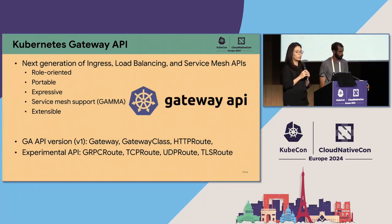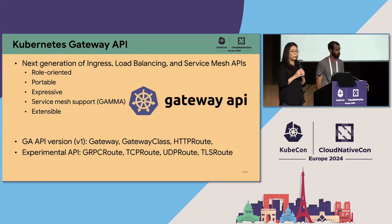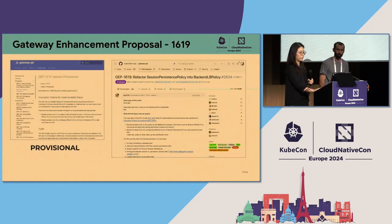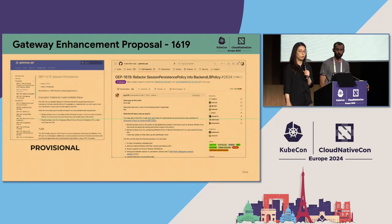Richard from my team is going to have a gRPC route talk at 2 p.m. Friday, so if you're interested please join us to learn more details about gRPC route. Gateway Enhancement Proposals, or GEP, defines a process for proposing changes to the Gateway API, and it ensures that changes follow a standard process and are discussed openly in the open source community.